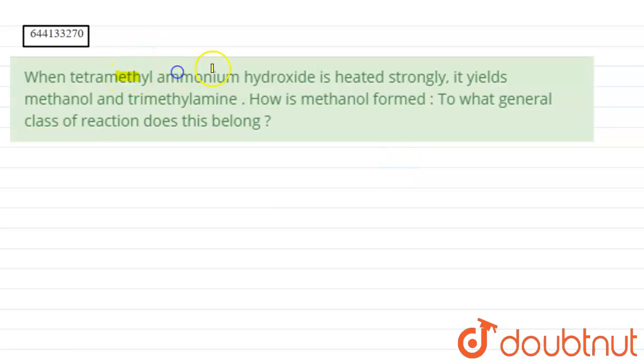we have been asked that when tetramethyl ammonium hydroxide is heated strongly, it yields methanol and trimethylamine. We have to tell how is methanol formed and to what general class of reaction does this belong. So first of all,